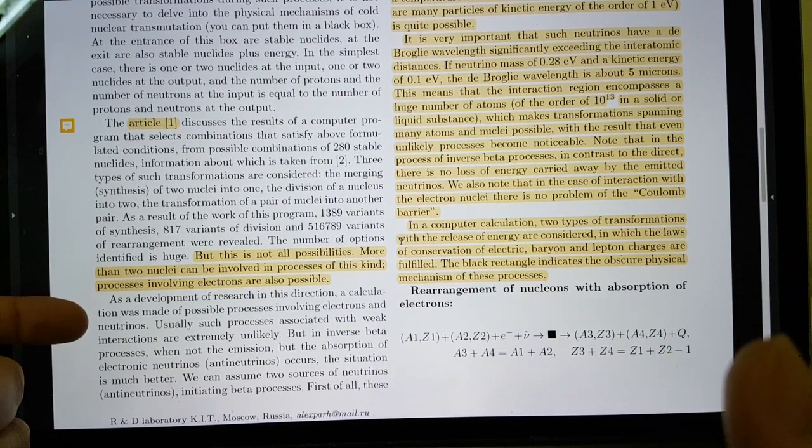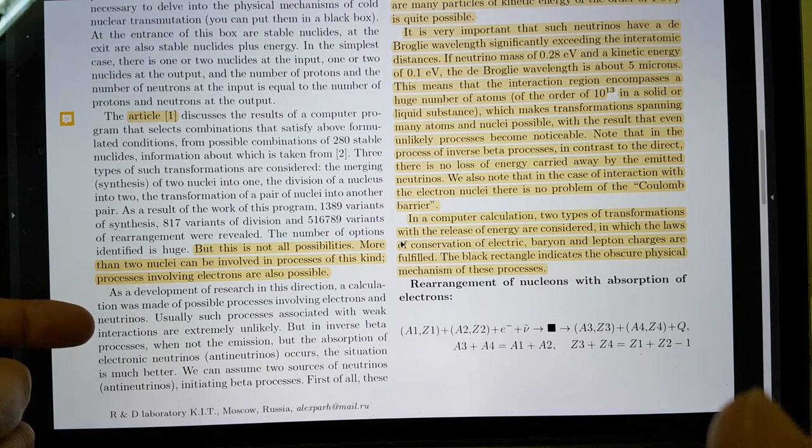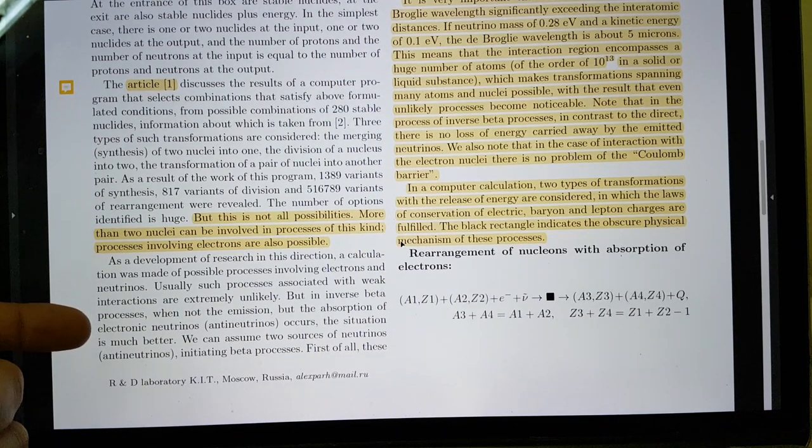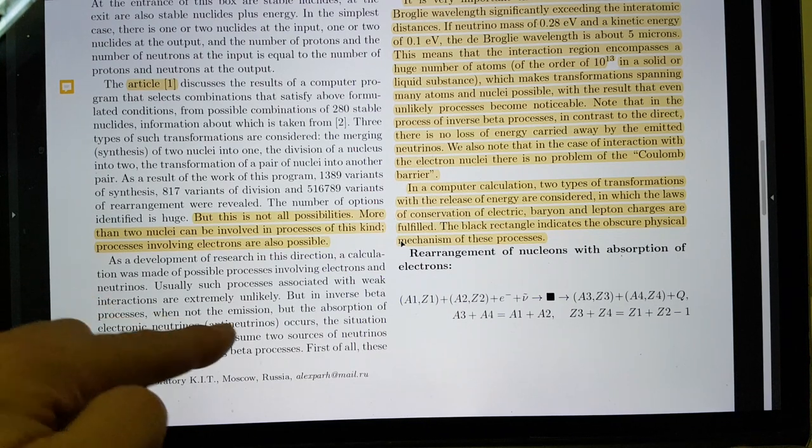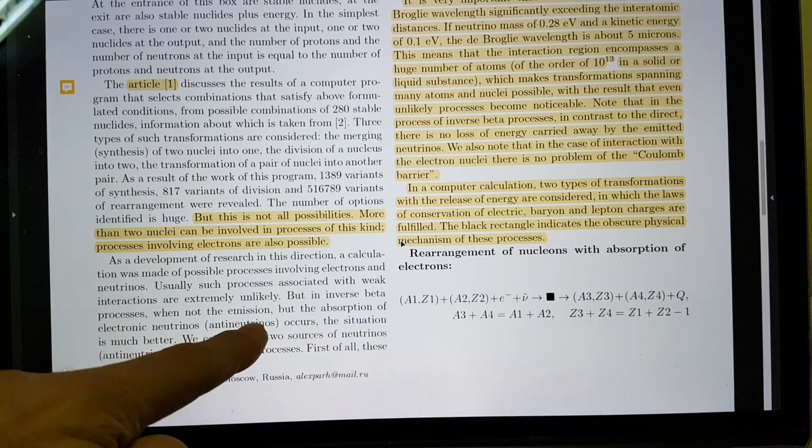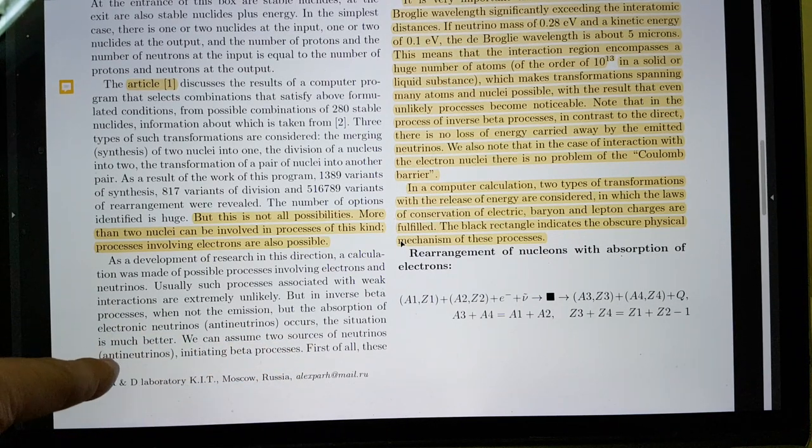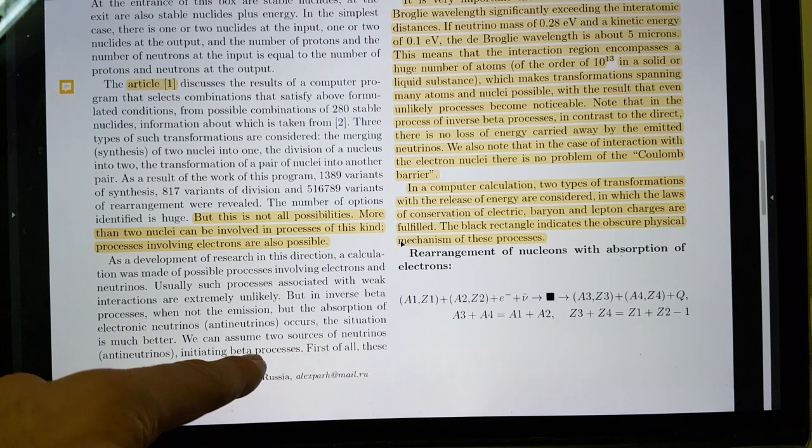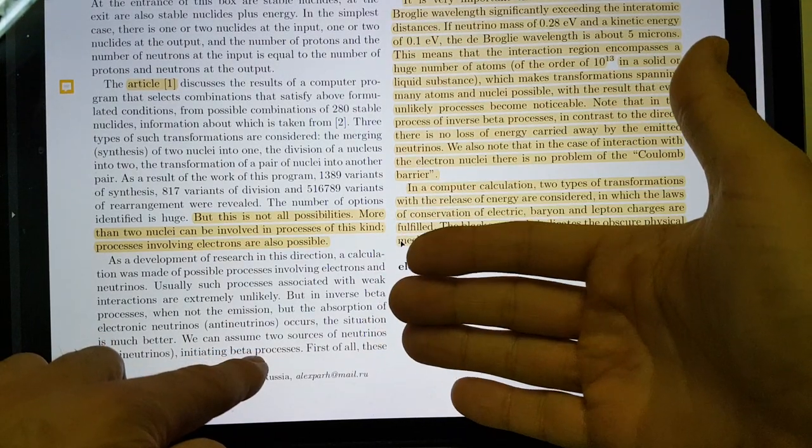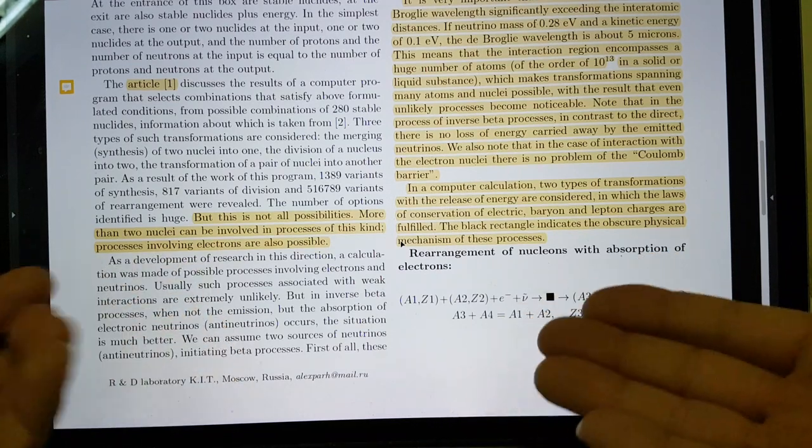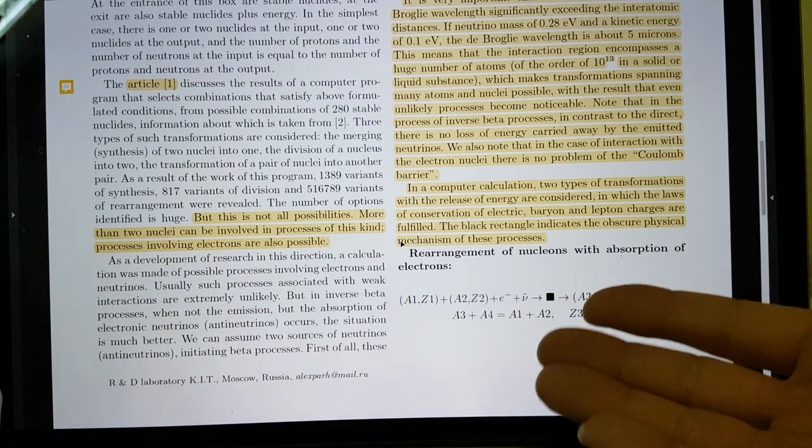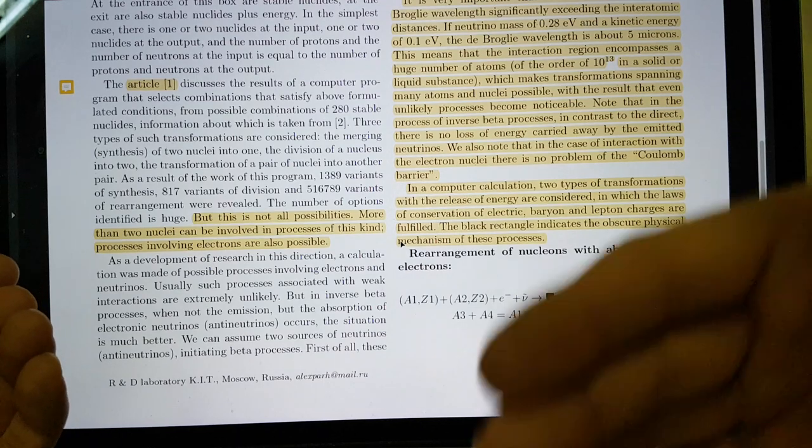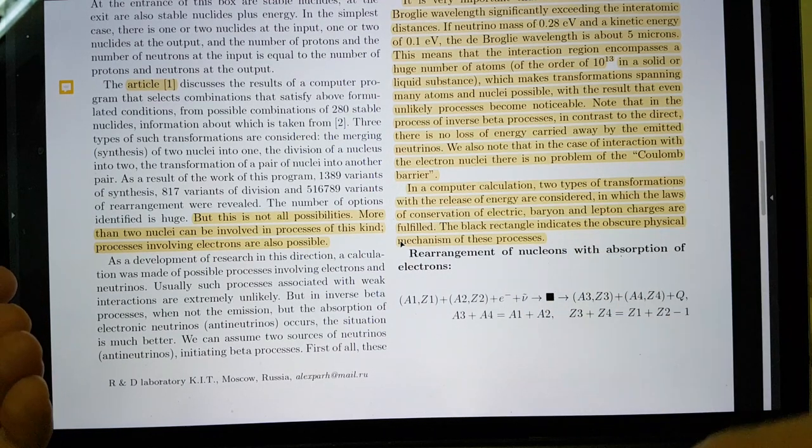As a development of research in this direction, a calculation was made of possible processes involving electrons and neutrinos. Usually, such processes associated with weak interactions are extremely unlikely. But in inverse beta processes, when not the emission but the absorption of electronic neutrinos or antineutrinos occurs, the situation is much better. We can assume the sources of neutrinos and antineutrinos are in ongoing beta processes. Basically, what he's saying is that ordinarily, the likelihood of having interactions involving electrons and neutrinos, these weak interactions, are just not going to happen. However, if it's kind of a reverse process, where you've got availability of neutrinos and antineutrinos, this is much more likely.